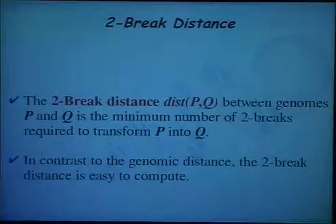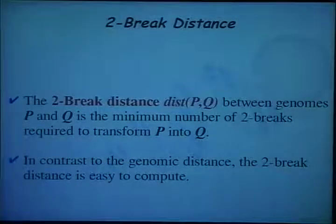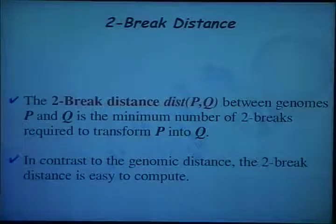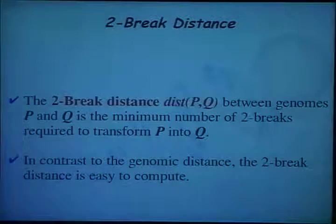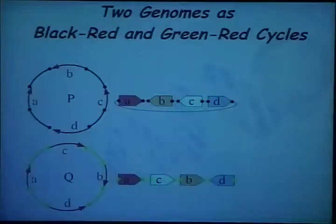We can define two-break distance between two genomes as the minimal number of these operations required to transform one genome to the other. It turns out that two-break distance is much easier to compute, and I will show you in a few slides how to do this.